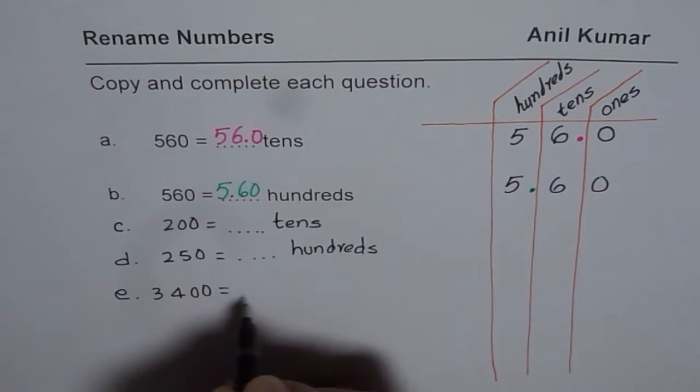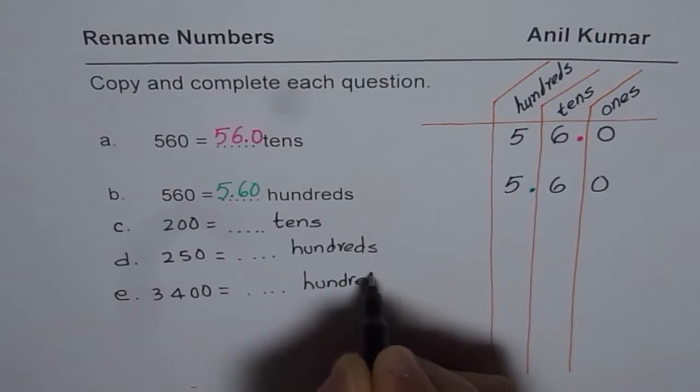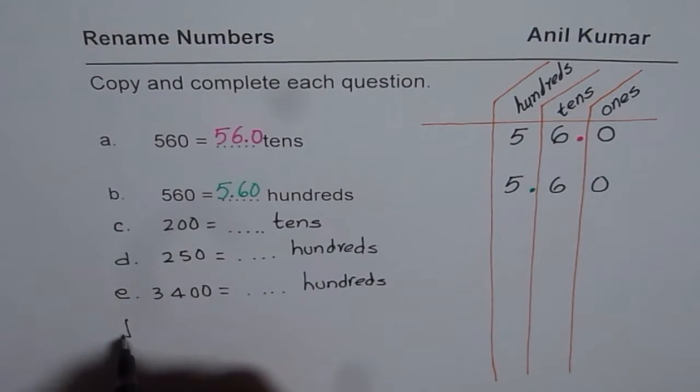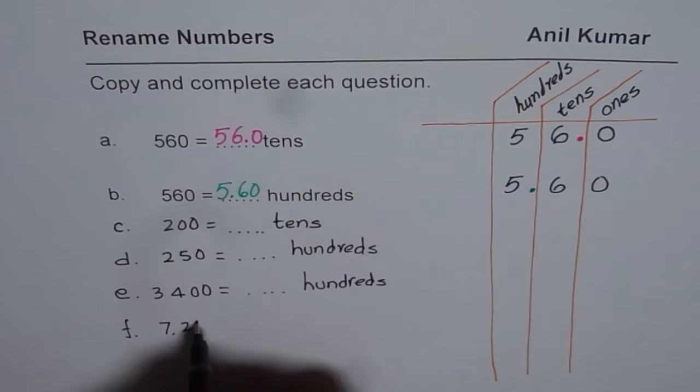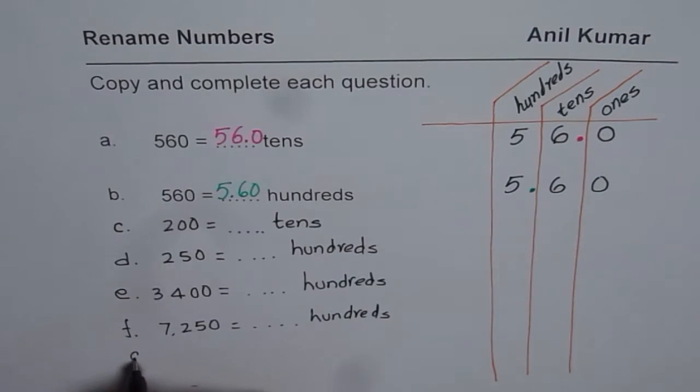We could have bigger numbers also. Let me write a number like 3,400. Write this number as hundreds. Let us explore with other big numbers. Let us say we have 7,250. How many hundreds will this have? Last is 9,235. You need to write this as tens.